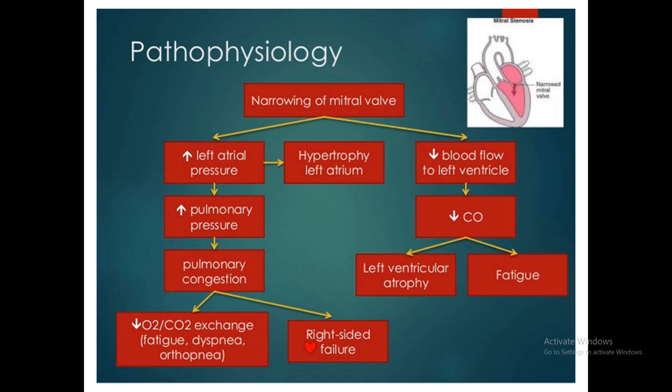The narrowing of the mitral valve increases left atrial pressure, which causes pulmonary pressure to increase — pulmonary congestion. This reduces oxygenation, increases carbon dioxide, and causes fatigue, dyspnea, and orthopnea — right-sided failure. On the other hand, reduced blood flow into the left ventricle reduces cardiac output and stroke volume. Left ventricular atrophy occurs, and hypertrophy of the left atrium occurs because of the high pressure and high volume.